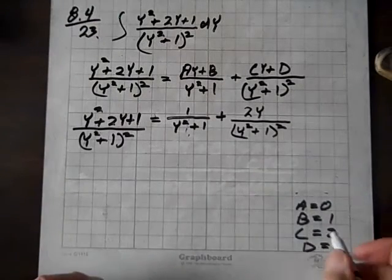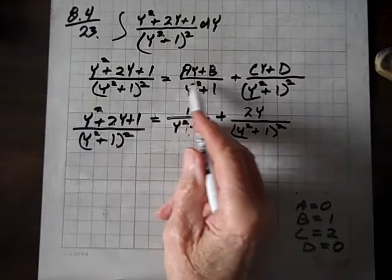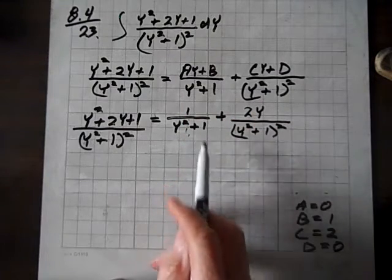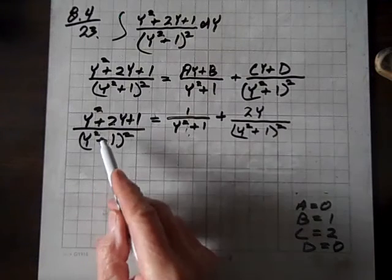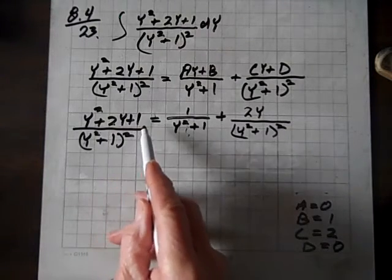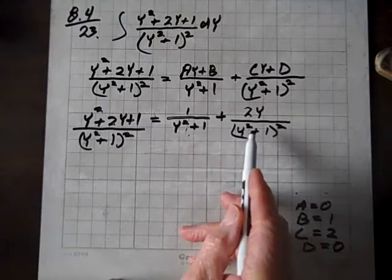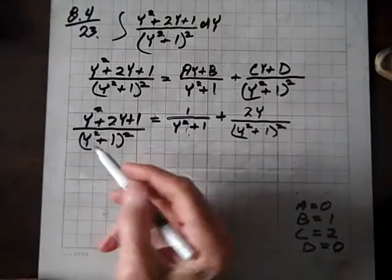So now, given this information and replacing a, b, c, and d with their respective identities, here's what we have. We broke this down into partial fractions, so now we need to integrate.